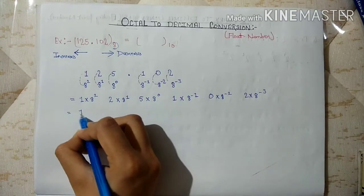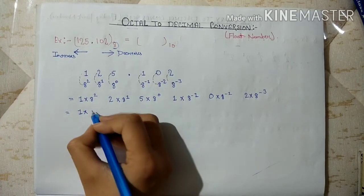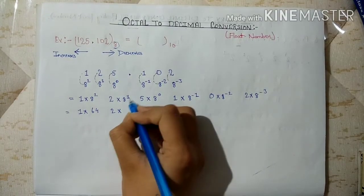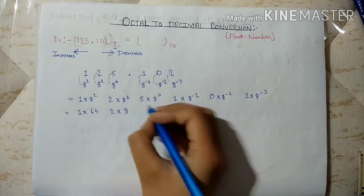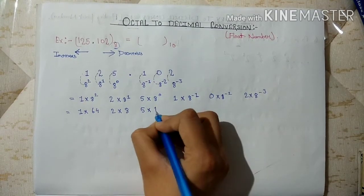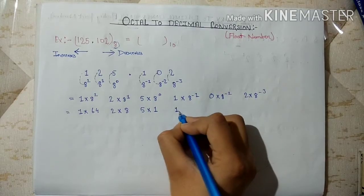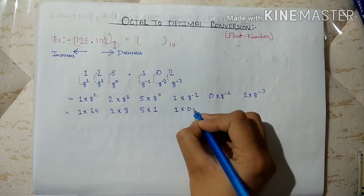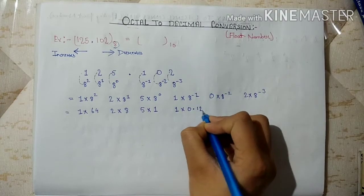Now, 1 into 8 to the power 2, that is 64, 2 into 8 to the power 1, that is 16, 5 into 8 to the power 0, that is 5, 1 into 8 to the power minus 1, that is 0.125.